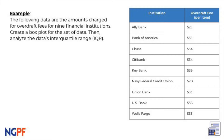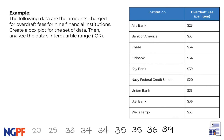The first thing we can do is rank the data points from least to greatest. This makes it easier to identify the minimum and maximum, which is 20 and 39, respectively. Then we can find the median, or the middle value, which is 34.